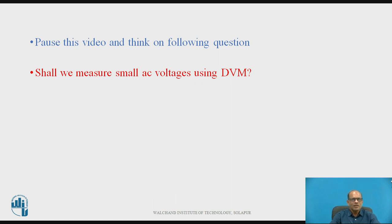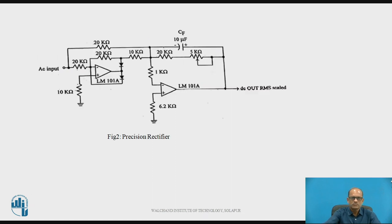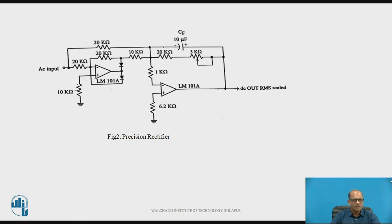Pause this video and think on this question: shall we measure small AC voltages using a digital volt meter? For small AC voltages, if the voltage measured is greater than 0.7V, it can be rectified using a diode and you can convert AC into DC using ordinary rectifiers. But if the input voltage is small — less than 0.7V, of the order of a few millivolts — then an ordinary diode cannot be used as a rectifier because the diode will not conduct.